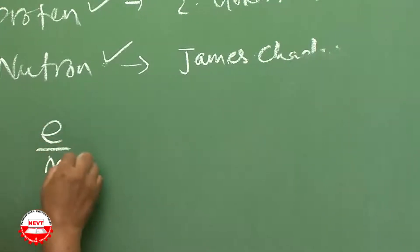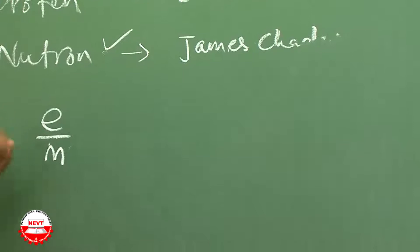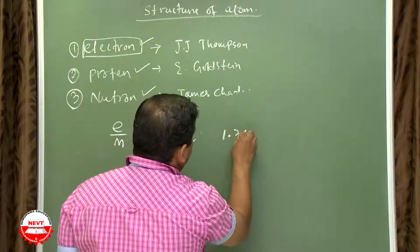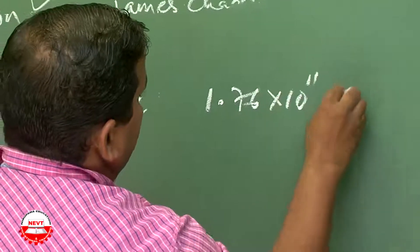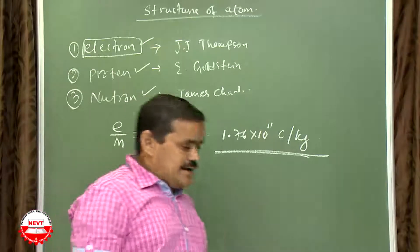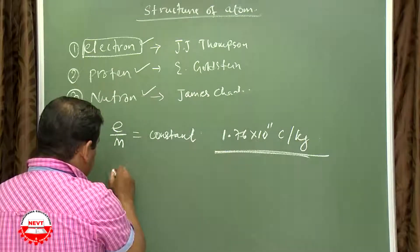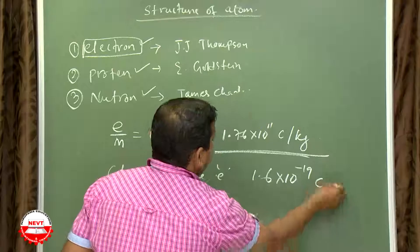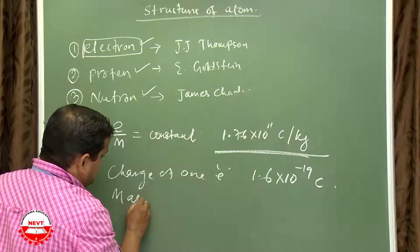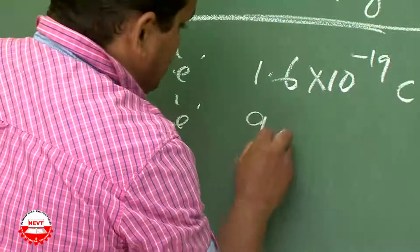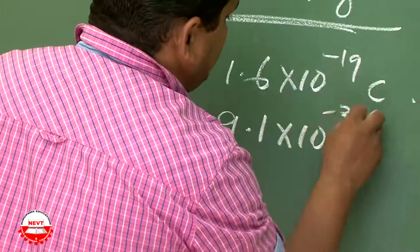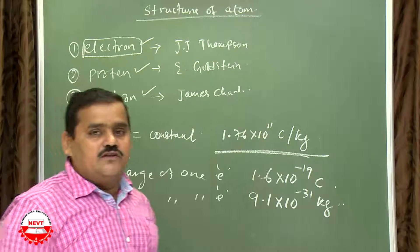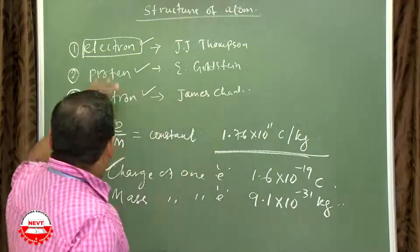It was also found that e/m — the ratio of the charge to the mass of the cathode ray particles — is always constant, with a value of 1.76 × 10⁻¹⁹ coulomb per kg. The charge of one electron is 1.6 × 10⁻¹⁹ coulomb, and the mass of one electron is 9.1 × 10⁻³¹ kg. Note that the charge of one electron is an important exam question.